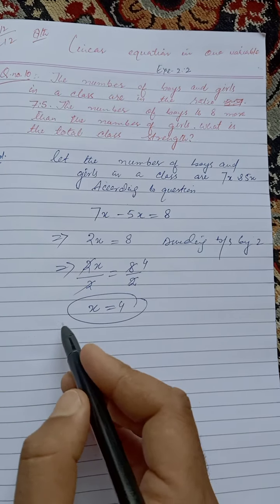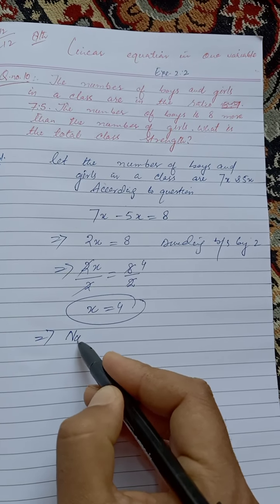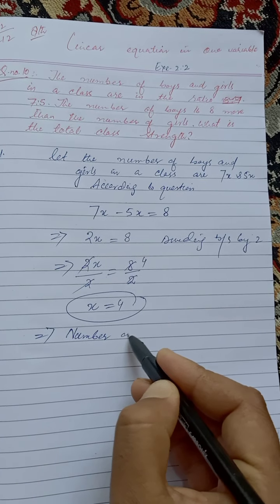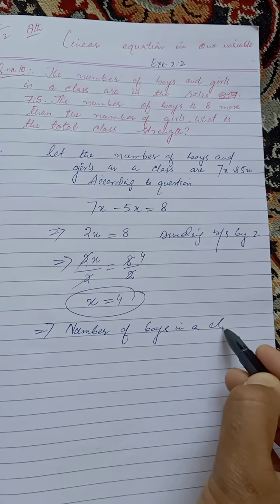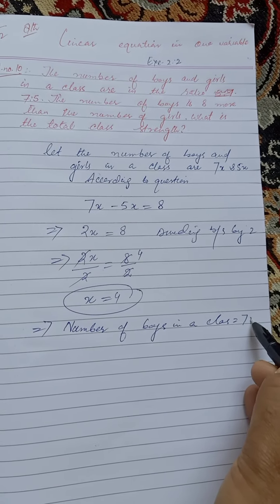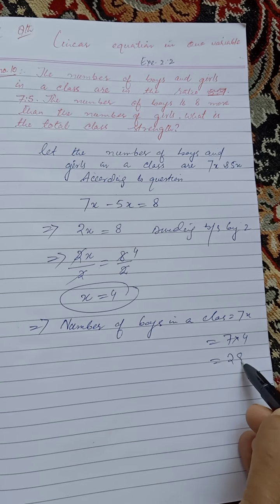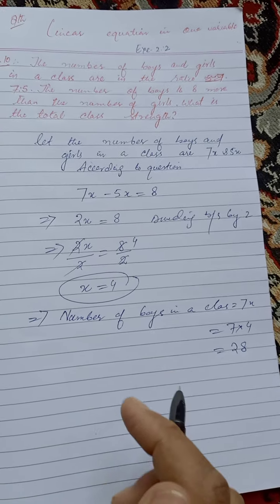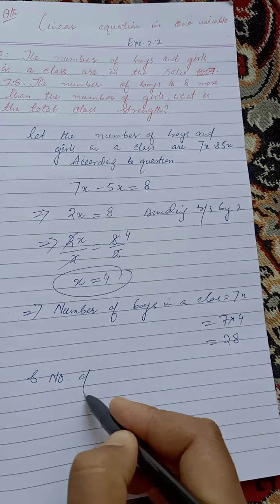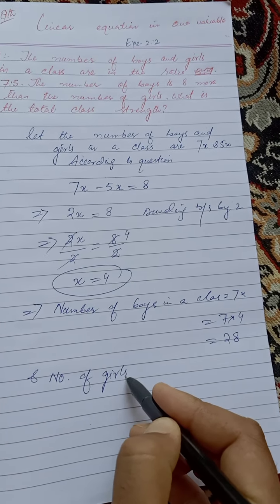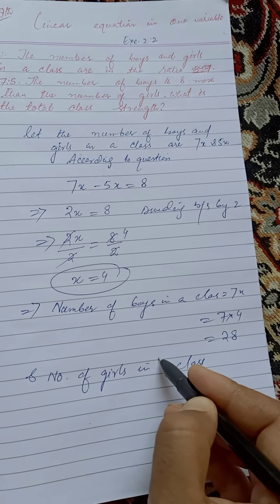This implies the number of boys in a class was 7x, that means 7 into 4, which equals 28.